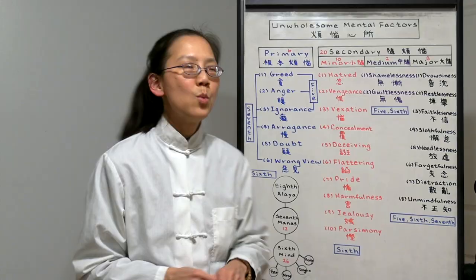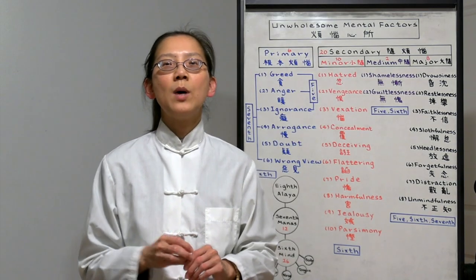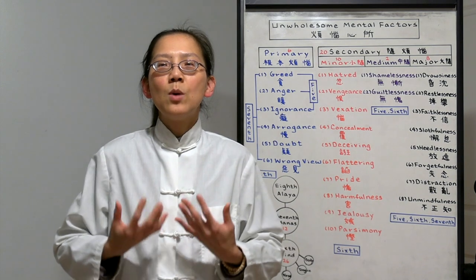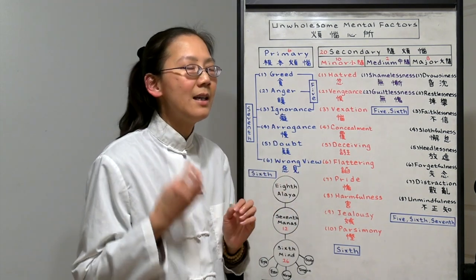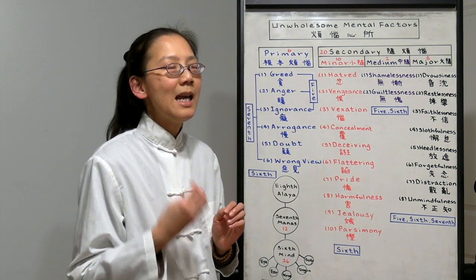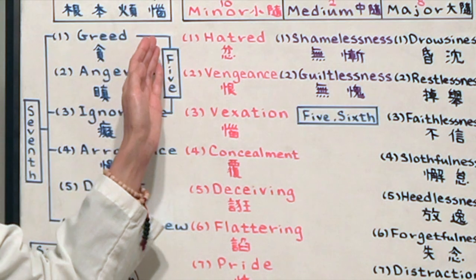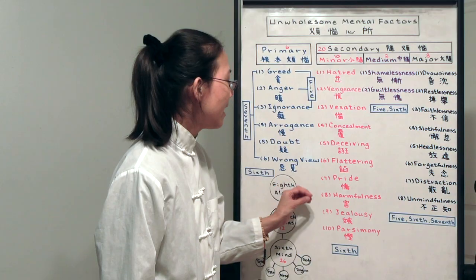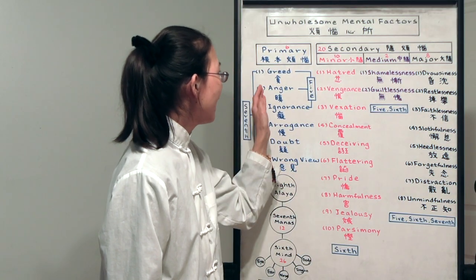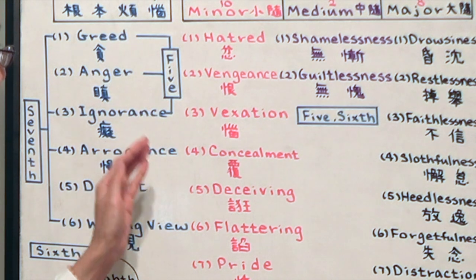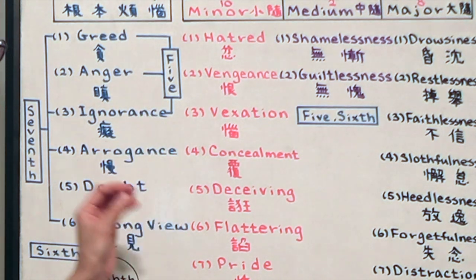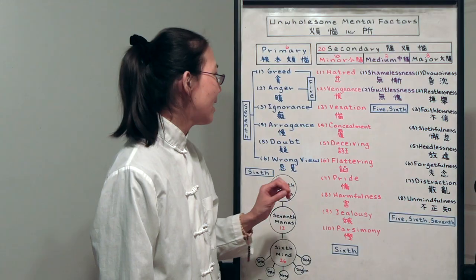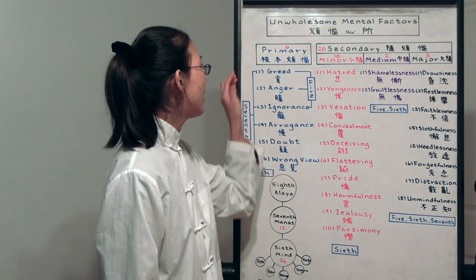Ten is parsimony. When we are stingy, we don't want to share our wealth or the dharma because we don't want others to have it. All these are very strong vexations and afflictions. Hatred, vengeance, vexation, harmfulness, and jealousy they are based off of anger. Concealment, deceiving, flattering are based on ignorance. Pride and parsimony, they are based on our greed.